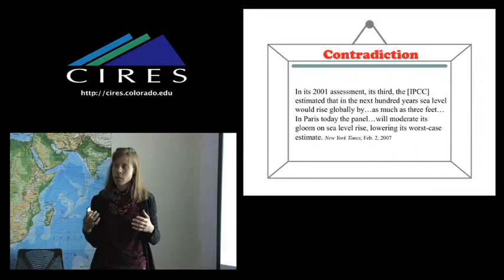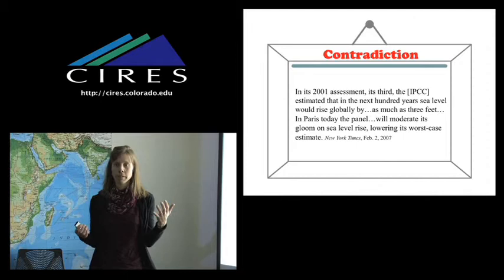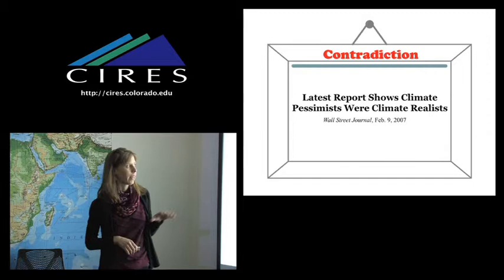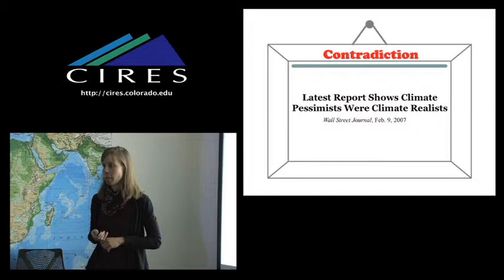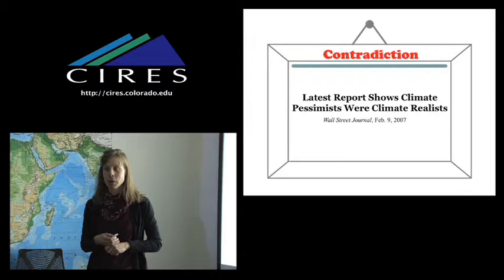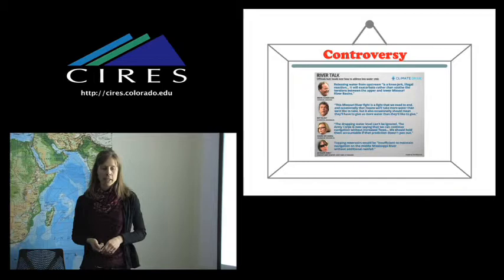And this idea of talking about frames is really common when you're looking at news analysis. It's the idea that we're taking certain pieces of the story and really emphasizing them as the most important. Here's just another example, this one now from the Wall Street Journal, which is also showing a contradiction frame. Climate report shows climate pessimists were climate realists. In other words, those deniers were more realistic than we've been pointing them out to be. And in fact, maybe those of us saying sea level is going to be three feet have been blowing it way out of proportion.